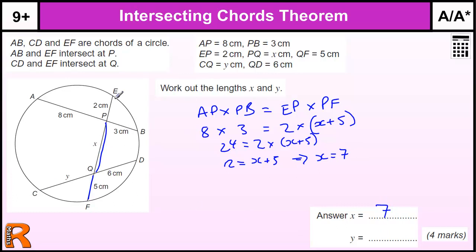And then we've got to use the other 2 chords. So now we know that x is 7, we can now look at y times 6, or 6y, and 5 times this length here. And we know x is 7, so 7 plus 2 is 9. 5 times 9, which is 45. So y is going to be 45 divided by 6.